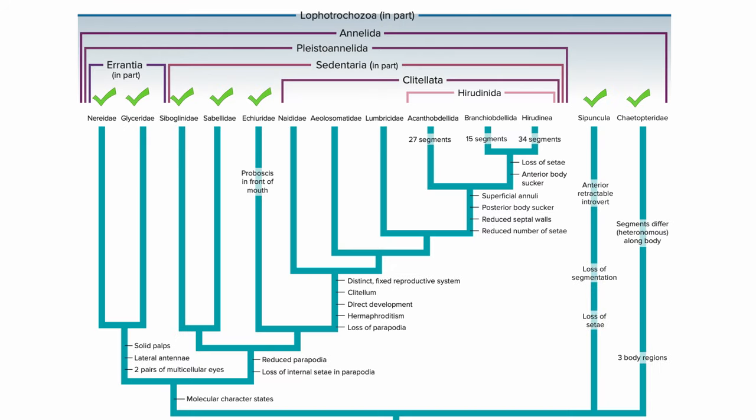So that's it for the polychaetes, but we still have a lot to cover in phylum Annelida. Let's move forward and go over Lumbricina and Hirudinea — the earthworms and leeches.